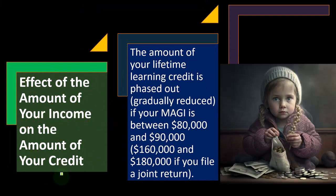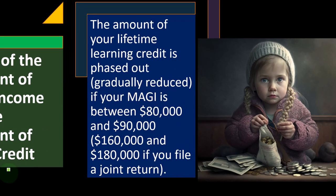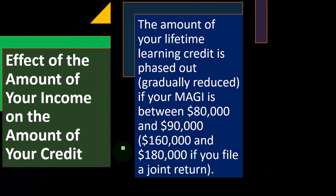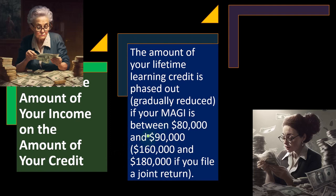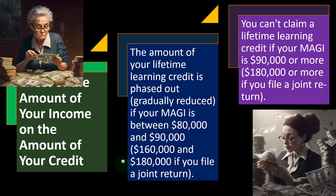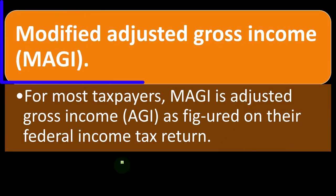The amount of your Lifetime Learning Credit is phased out — gradually reduced — if your MAGI is between $80,000 and $90,000 (or between $160,000 and $180,000 if you file a joint return). You cannot claim a Lifetime Learning Credit if your MAGI is $90,000 or more, or $180,000 or more if filing jointly. The joint return thresholds are effectively doubled, reflecting that two earners' income is combined.